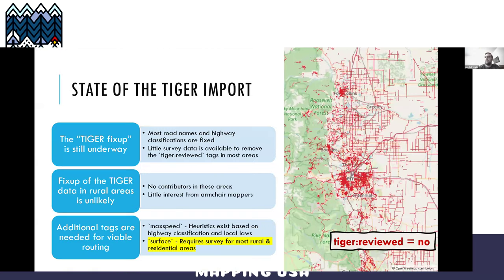You can see the map on the right — this is around Denver and Colorado. Everything highlighted in red still has the Tiger reviewed equals no tag. So there's a lot that's been imported with Tiger, and edits that have been made haven't been good enough to consider those roads reviewed.